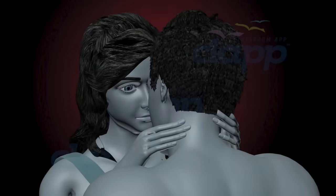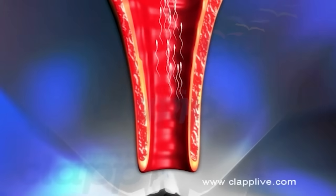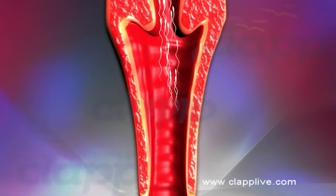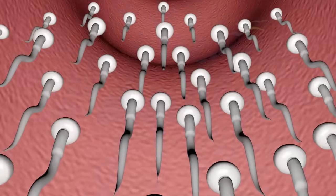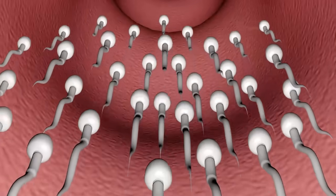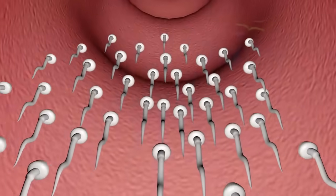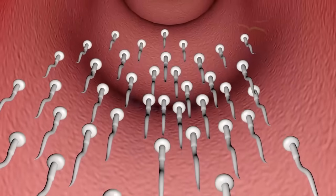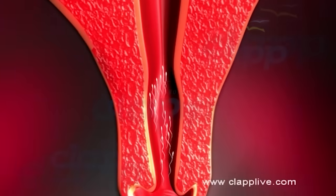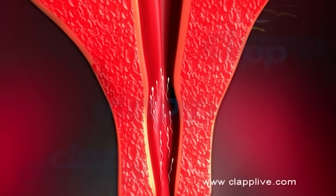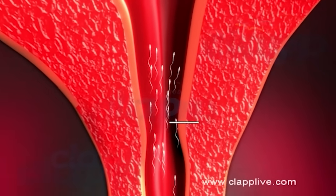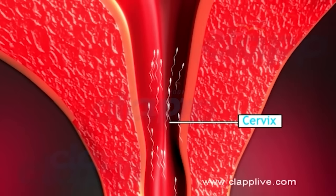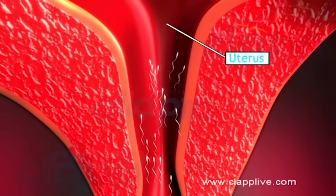During sexual intercourse, sperm enters the vagina and begins their journey. Sperm swim at a rate of about 1 to 4 millimeters per minute. During ovulation, cervical mucus changes, facilitating sperm passage through the cervix and into the uterus.